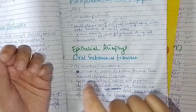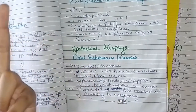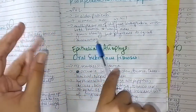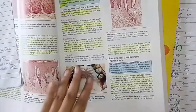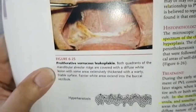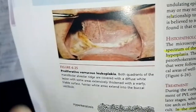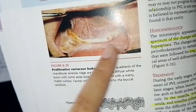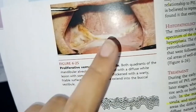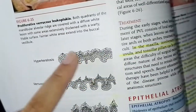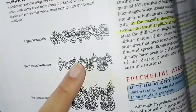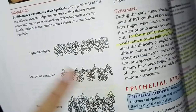PVL occurs in multiple areas of the oral cavity and appears white with both smooth and warty regions. It slowly grows but progresses into squamous cell carcinoma — it can become malignant. Histopathologically, it shows hyperkeratosis with a thickened keratin layer, verrucous keratosis, and can progress to verrucous carcinoma and then squamous cell carcinoma.